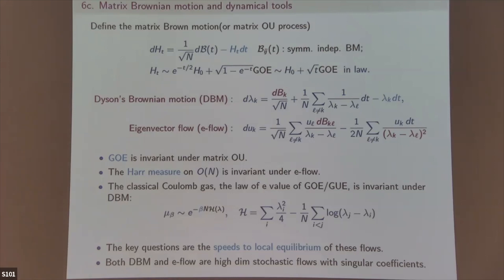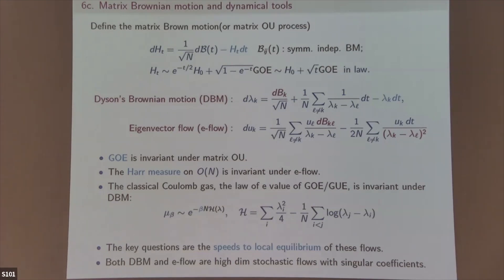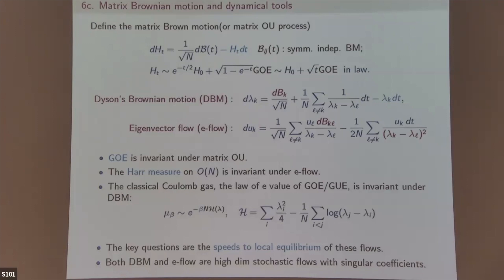[Q&A] Does any of this depend on periodic boundary conditions? For the band matrix, yes — we use translation invariance. For everything else, no. If translation invariance is broken, we can't do it. About Dyson's threefold way — GOE, GUE, GSE — the analysis is hardest for β = 1 (GOE). We can also handle non-integer β bigger than some threshold.